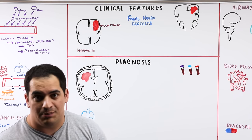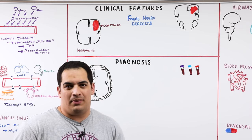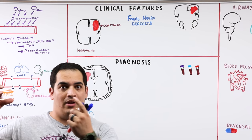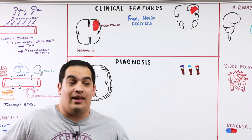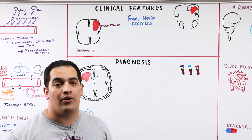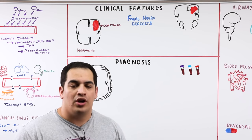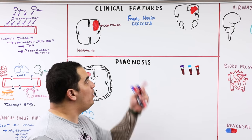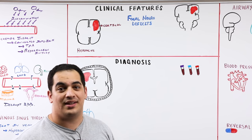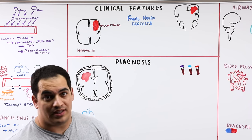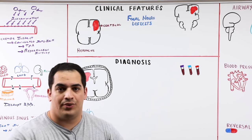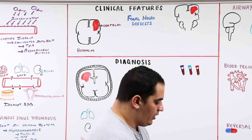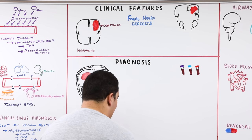Focal neurological deficits depend on the location of the bleed — aphasia, weakness on one side, gaze preferences, sensory loss — similar to ischemic stroke syndromes, which are covered in a separate video.